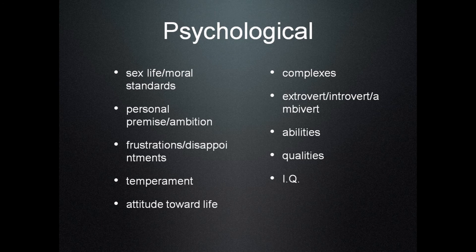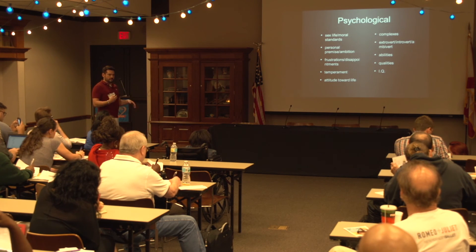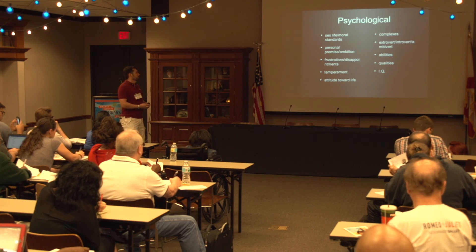The psychological aspects of the character include: sex life, moral standards, personal premise and ambition, frustrations and disappointments, temperament, attitude toward life, complexes — such as narcissistic personality disorder or Napoleon complex — whether they're an extrovert, introvert, or ambivert, their abilities, their character qualities, and their IQ.